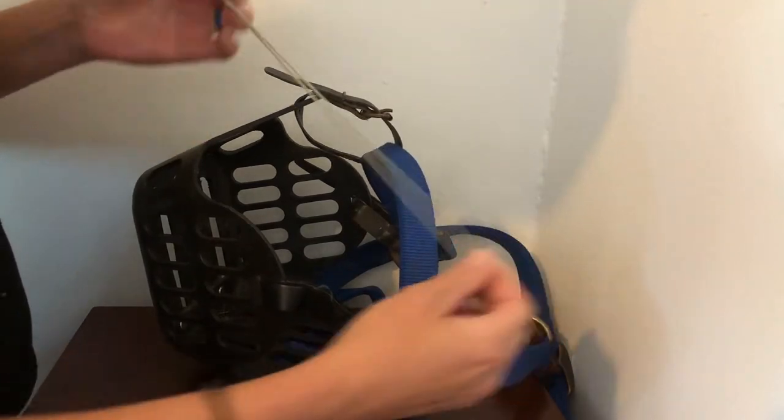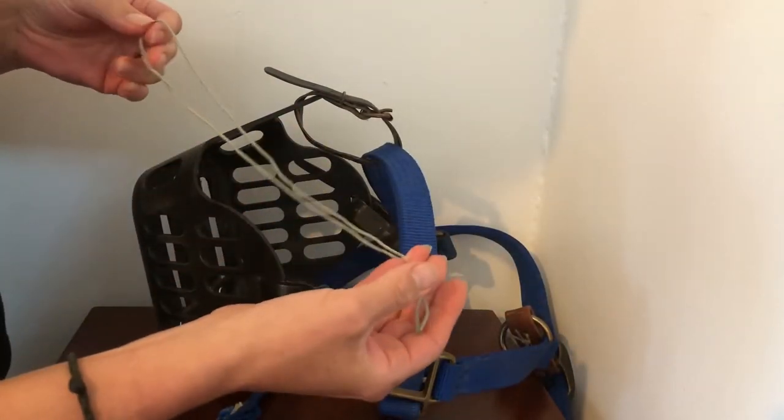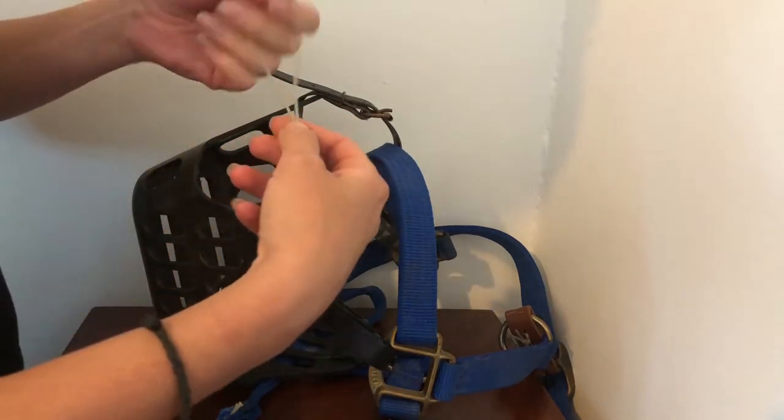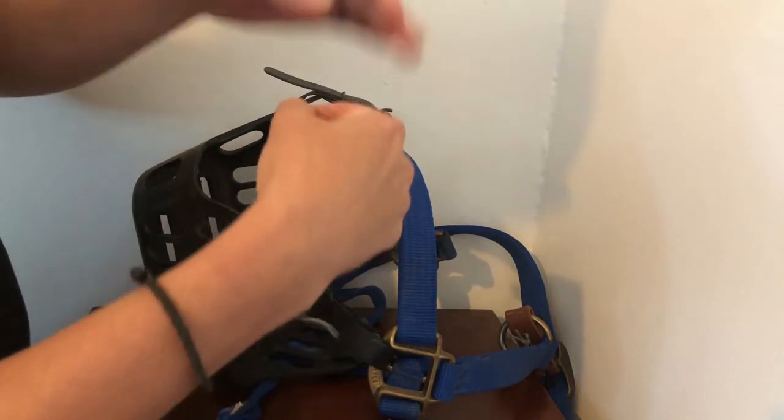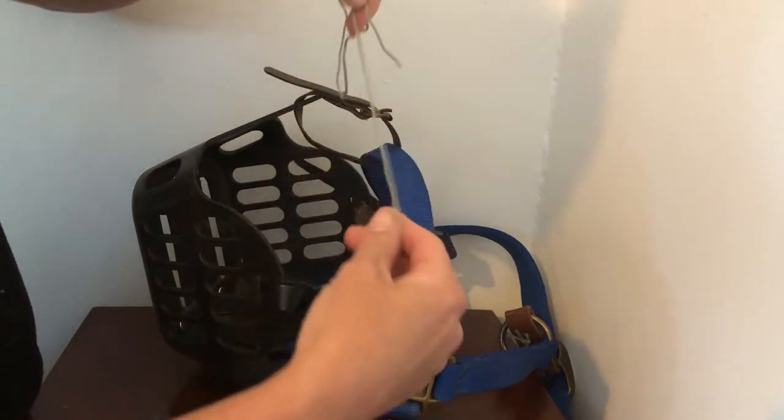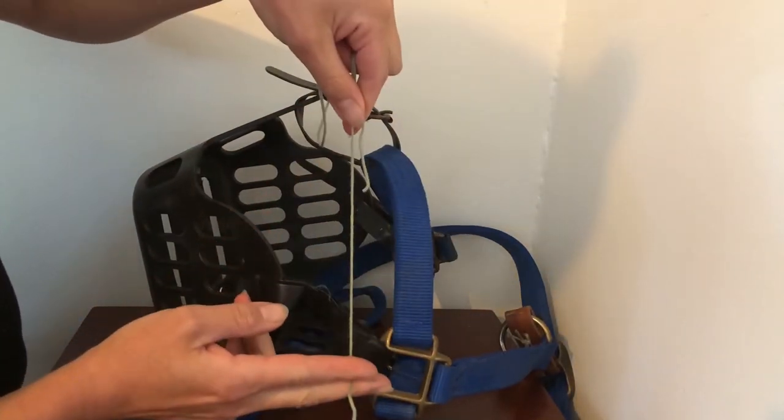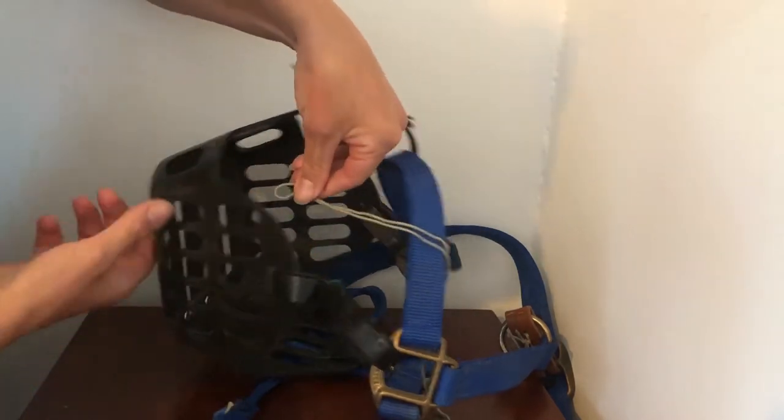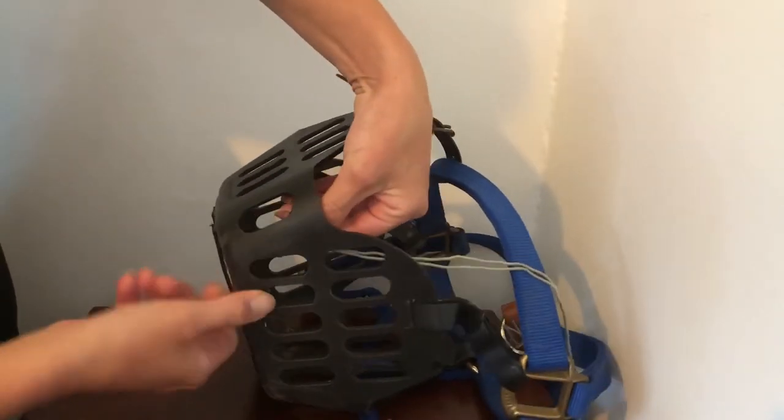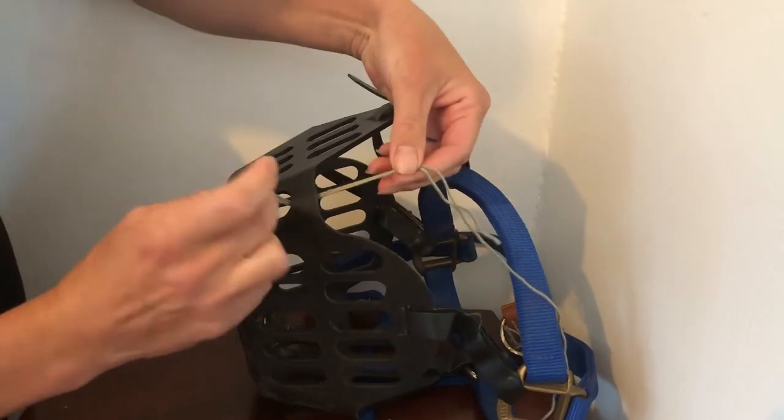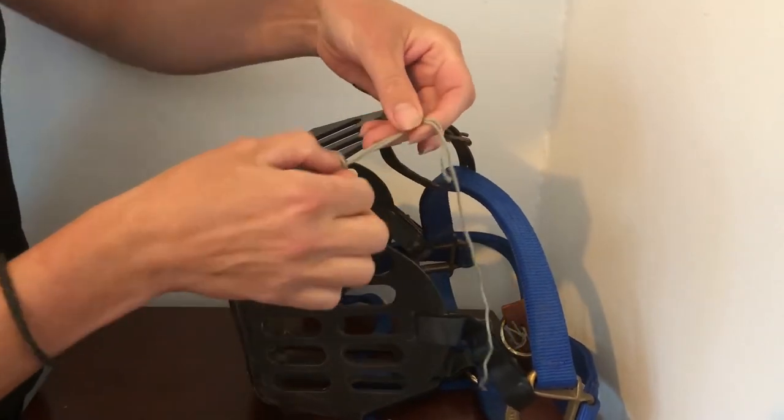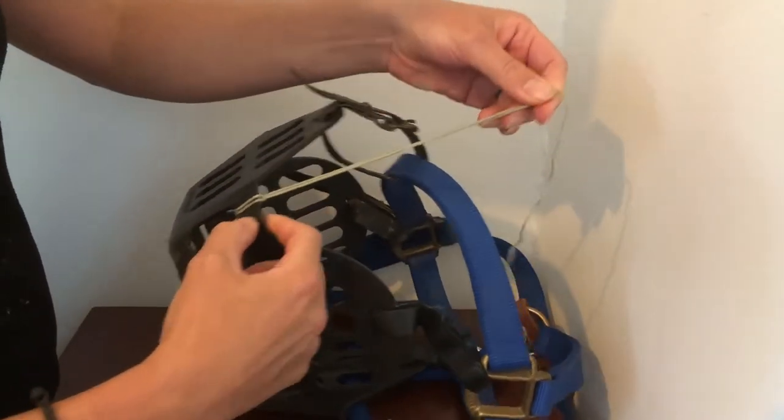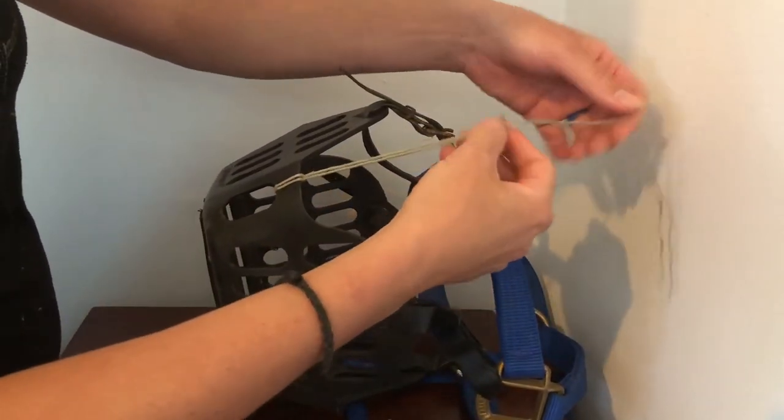I like to actually not have the knot right on the noseband, so I'm going to make the ends uneven. Then I'll grab this loop and pull it through here, and then put the ends of my string through the loop, and that gives us a little hitch knot right there.